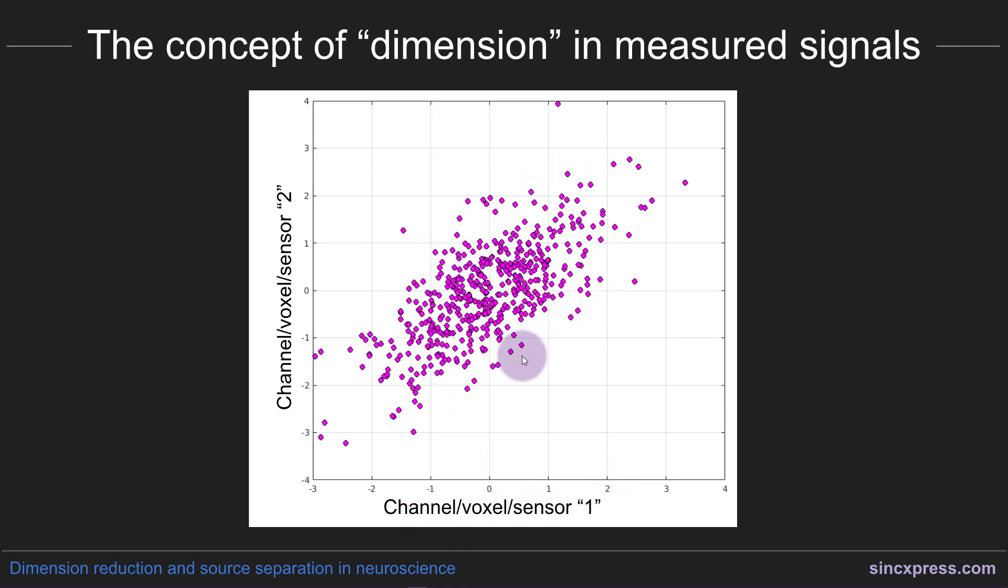So what I'm doing here is depicting a two-dimensional dataset. You can imagine that this is EEG and I measured EEG from two channels. These are the data corresponding to channel one and the microvolt value for channel two. That means that each point here would be a time point. So we measured data at this time point and the microvolt value at this time point was minus one-half on electrode one and plus one point two on electrode two. This is our two-dimensional dataset.